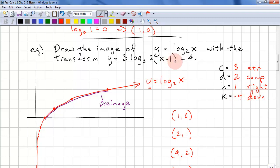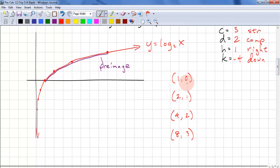So we have 1 right, negative 4 down, 2 as a compress, and 3 as a vertical stretch. Let's take some points. We have (1, 0), log_2(2) is 1, log_2(4) is 2, log_2(8) is 3. Always try to pick the integer values to transform because they're going to be the easiest. We can use the table of values.